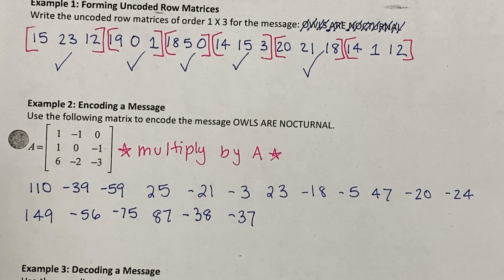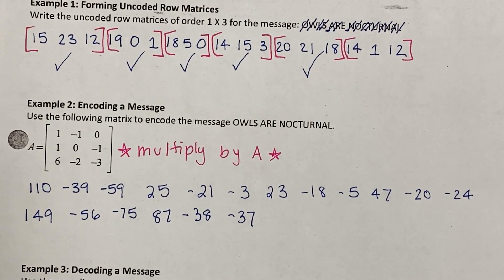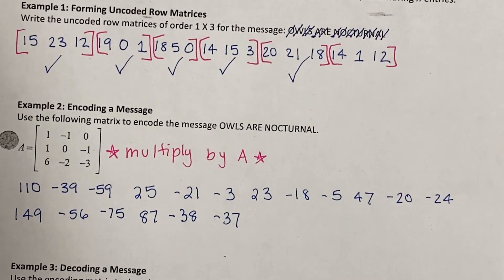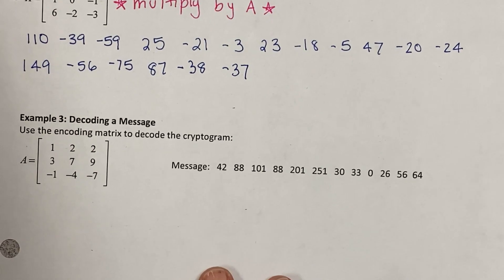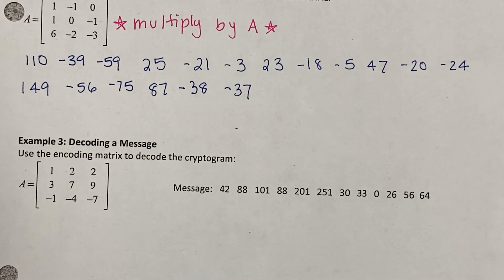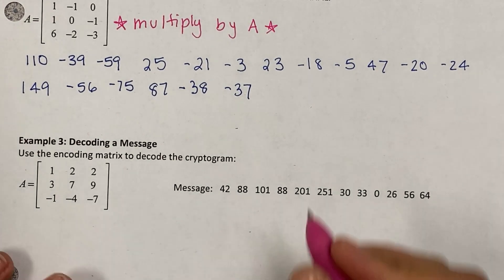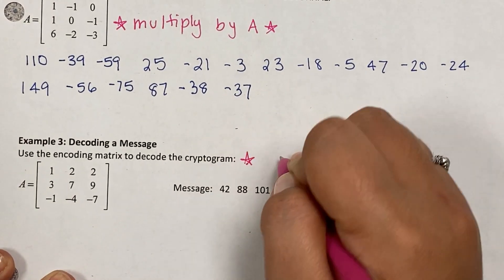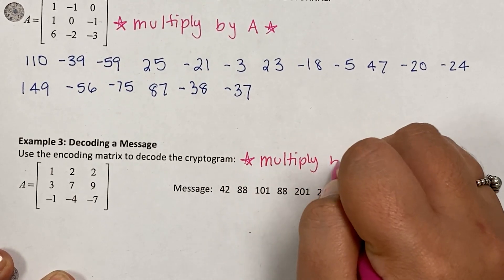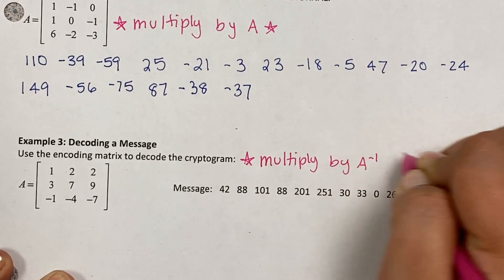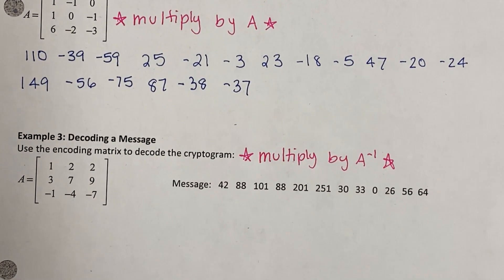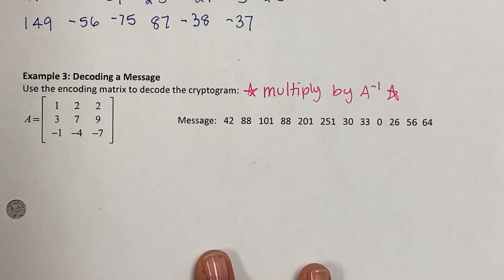Now, what if I wanted to decode a message? When you encode a message you multiply by matrix A; when you decode a message you multiply by A inverse, because you want to undo the encoding process.